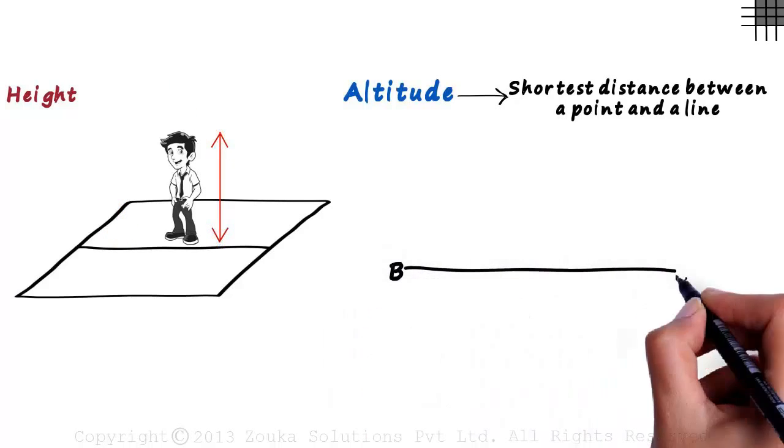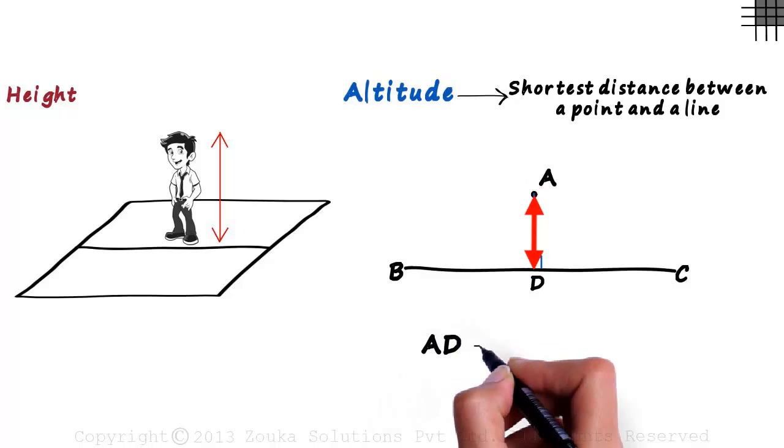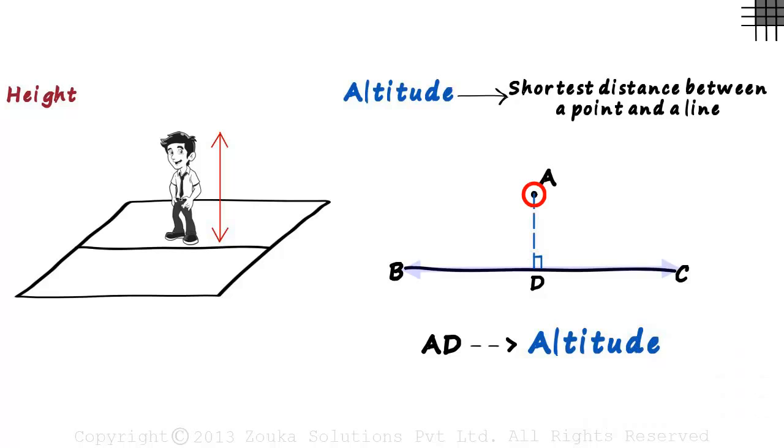Consider a segment BC and point A somewhere over it. This perpendicular distance from point A to D is called the altitude. AD is called the altitude. It is also the shortest distance between point A and BC.